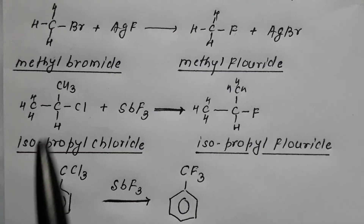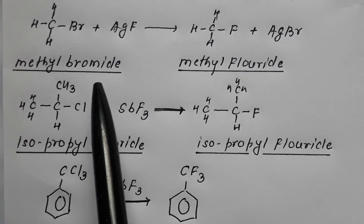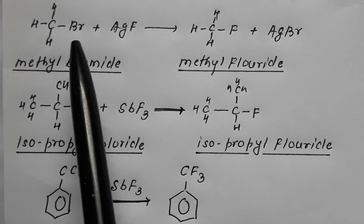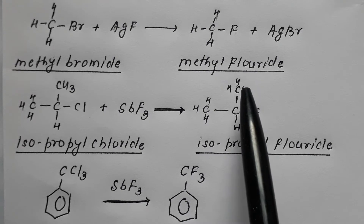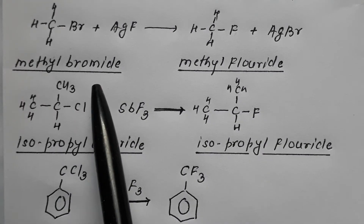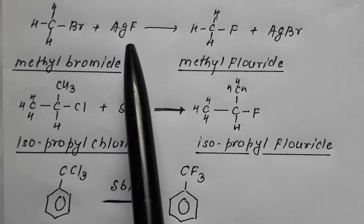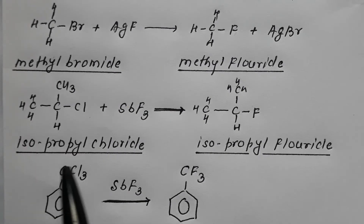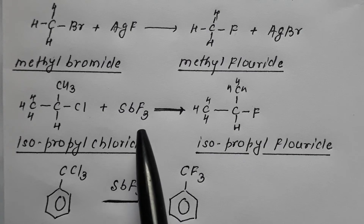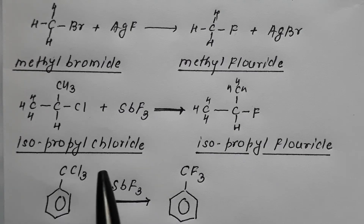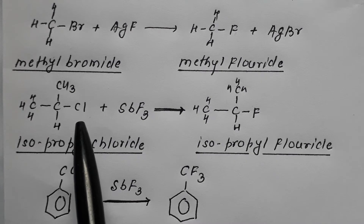For example, if methyl bromide is made to react with silver fluoride, the bromide gets exchanged by fluoride and the product is methyl fluoride. Similarly, isopropyl chloride on reaction with antimony trifluoride results in formation of isopropyl fluoride by the exchange of chloride by fluoride.